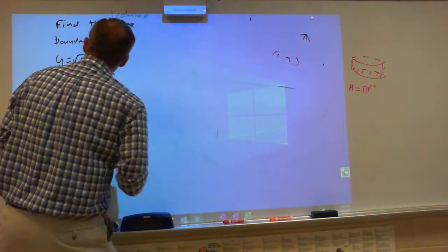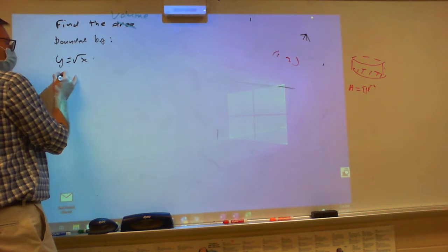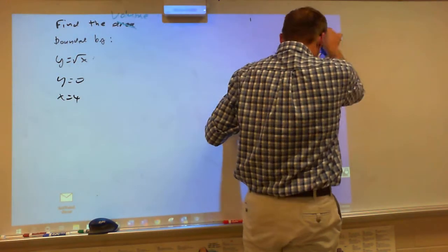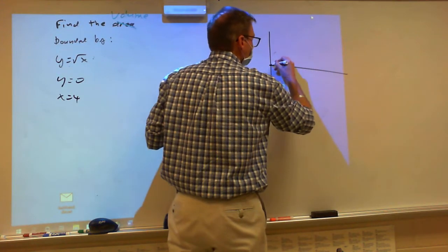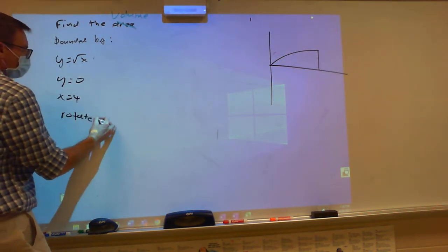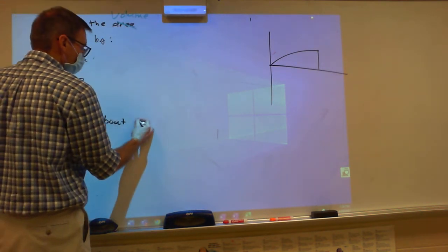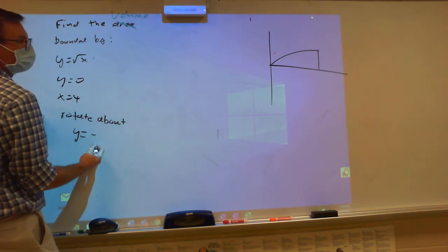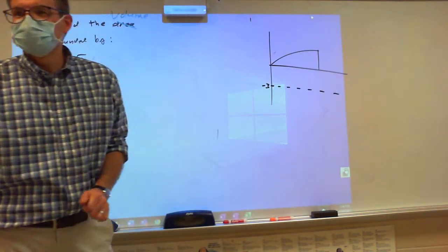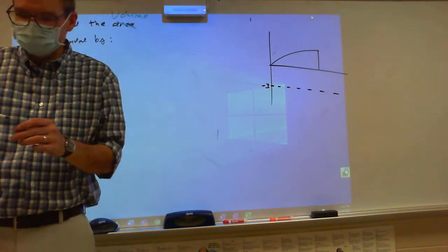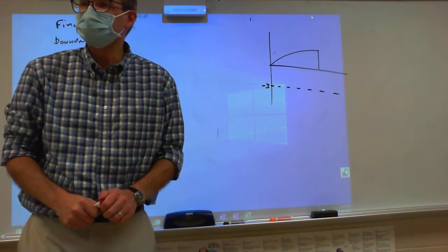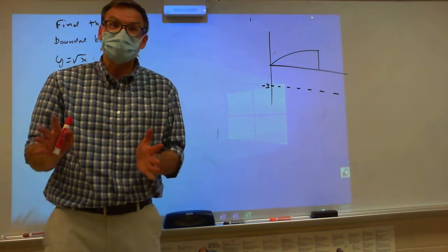I still like that square root function. So now I've got y equals zero and x equals four — going back to this picture. But now we're going to rotate about the line y equals negative three. It's a donut — actually it's called a washer. That's the technical name.